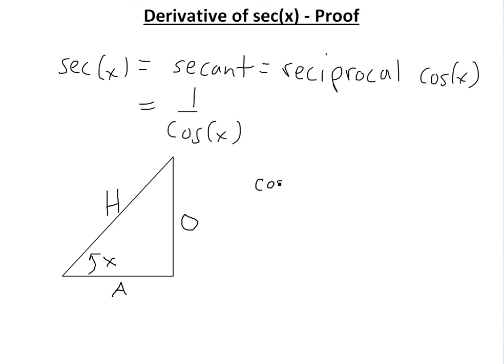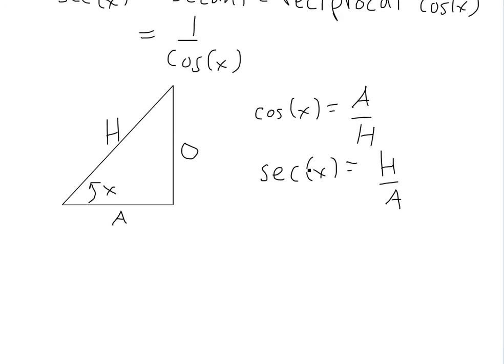Cosine of x is equal to A over H, or adjacent over hypotenuse, so then secant of x is going to be equal to the reciprocal, or you just flip them around, so it's H over A.